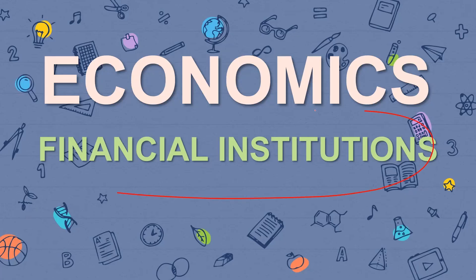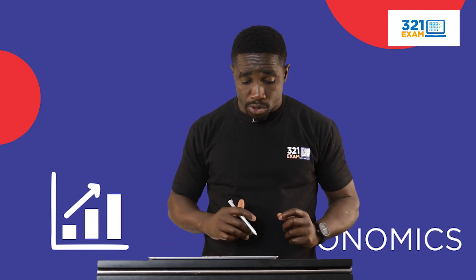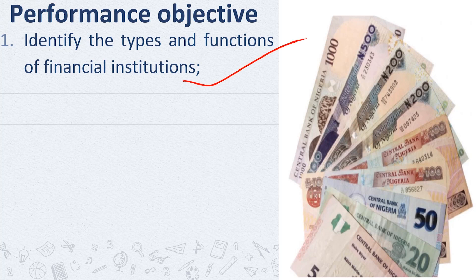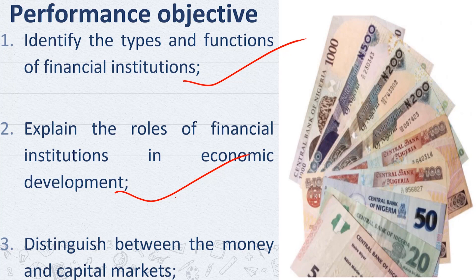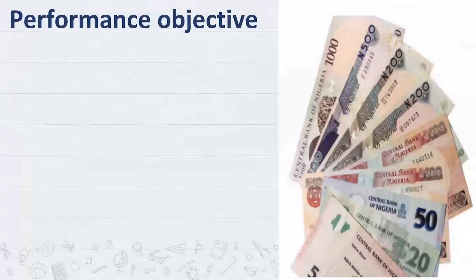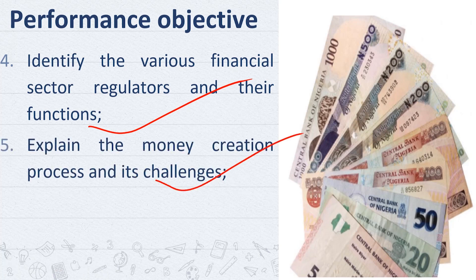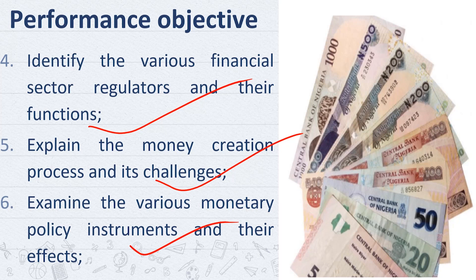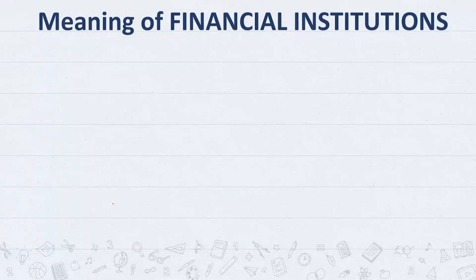Welcome to 321 Exams. Today we'll be looking at economics, and our topic for today is financial institutions. According to the syllabus, the performance objectives of this topic are: number one, identify the types and functions of financial institutions; number two, explain the roles of financial institutions in economic development, specifically in Nigeria; number three, distinguish between the money market and the capital market; number four, identify the various financial sector regulations and their functions; number five, explain money creation and its challenges; and number six, explain the various monetary policy instruments and their effects, and appraise the challenges facing financial institutions in Nigeria.